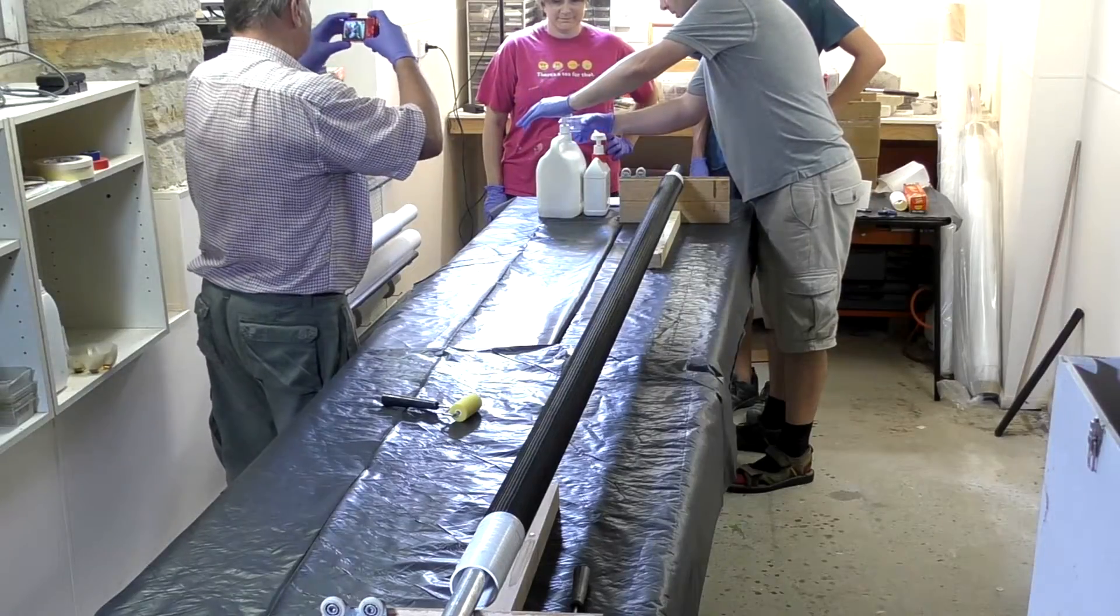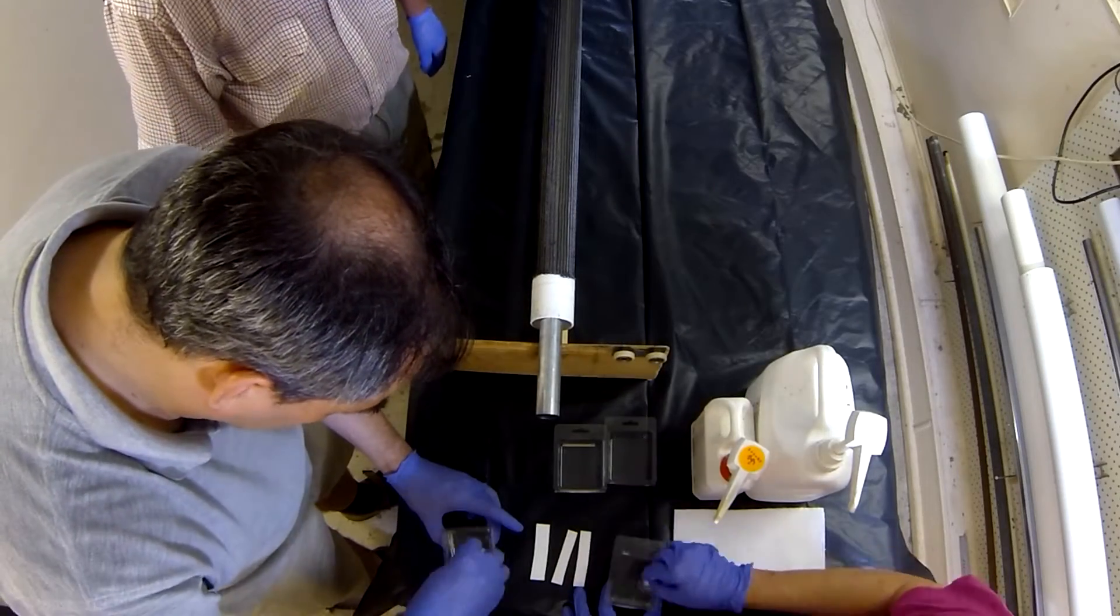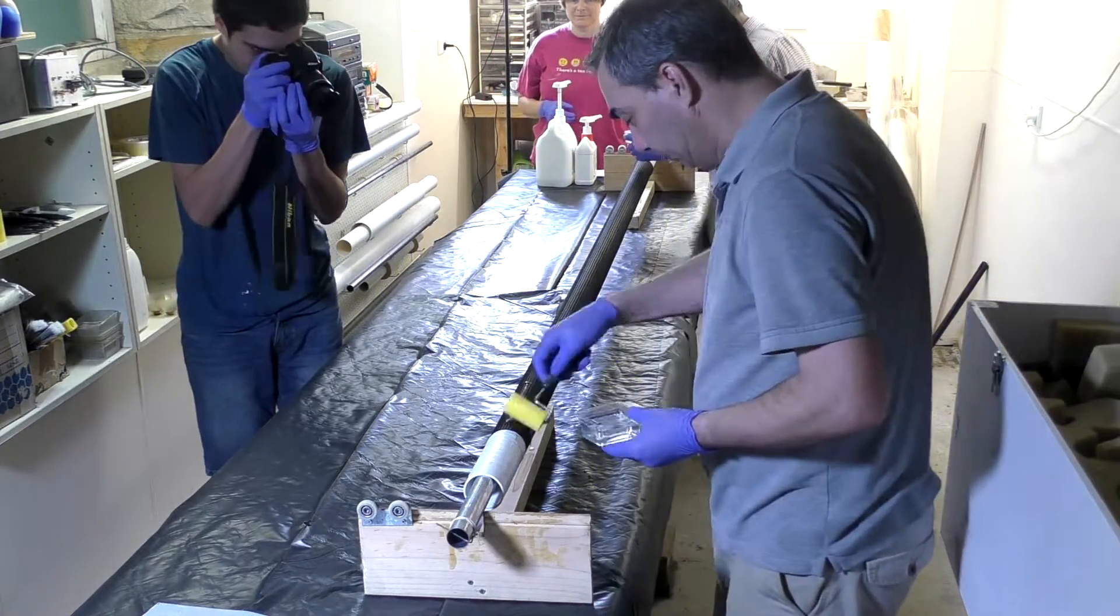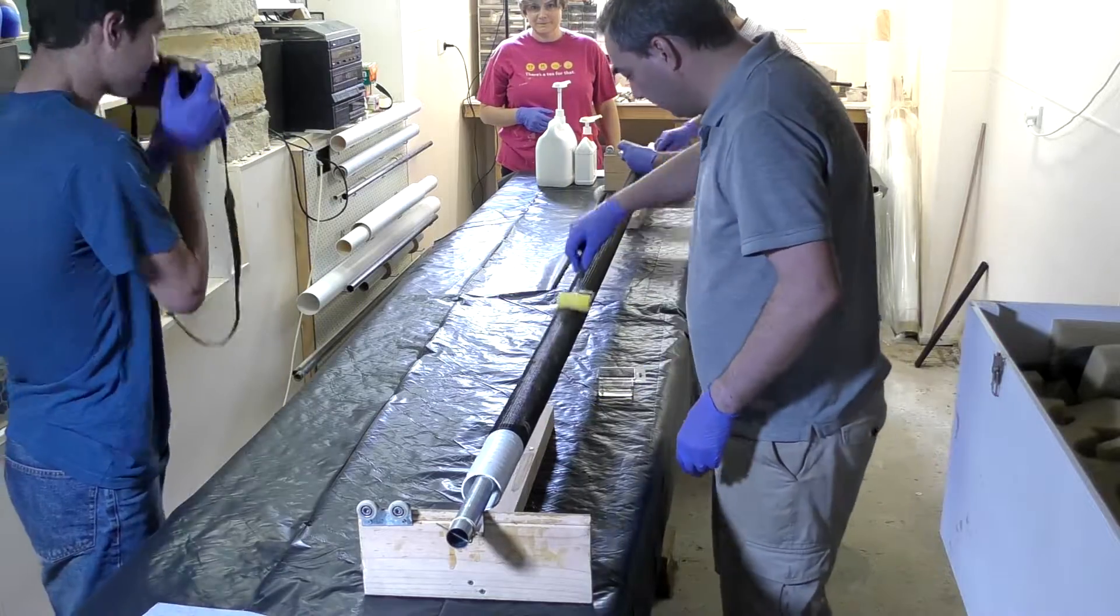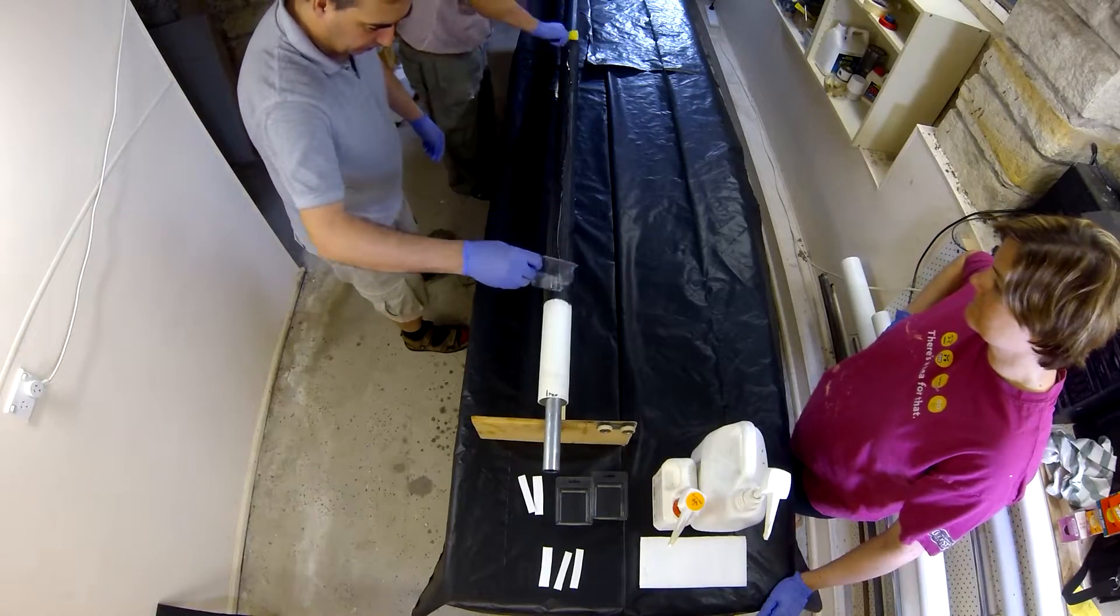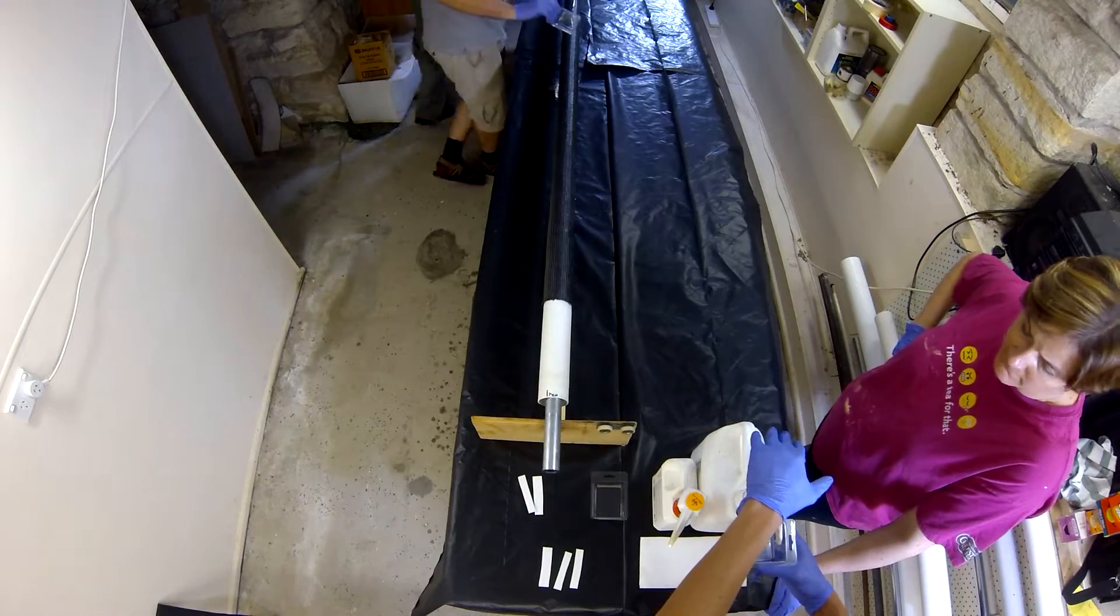Now we mix up the West Systems epoxy and start pouring it on. Rollers make it much easier to work the epoxy into the sleeve. It is important to have help on long tubes like this because the pot life is only around 20 minutes, so you have someone rolling it out, someone else mixing, and someone else assisting with rotating of the tube.